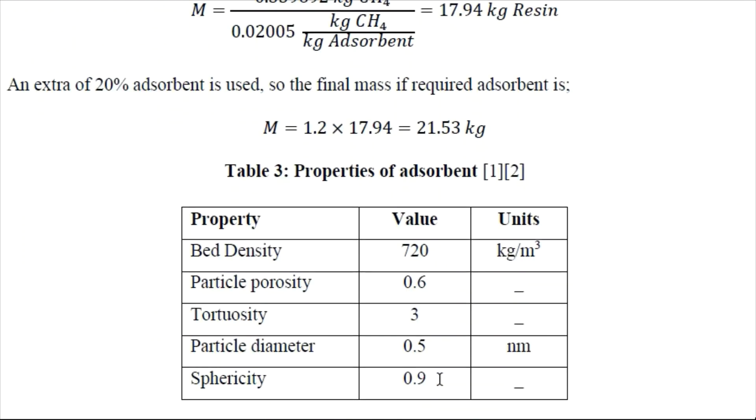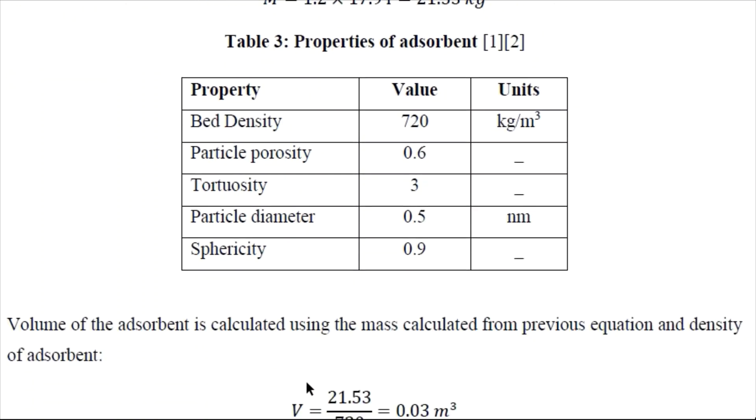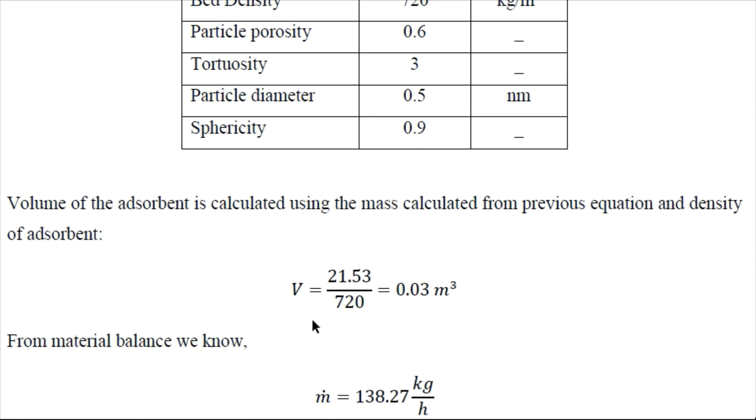So now we have listed here the physical properties of the adsorbent: bed density, particle porosity, torosity, particle diameter, sphericity. So based on the density of the adsorbent we can determine the volume using the mass determined in the previous step.